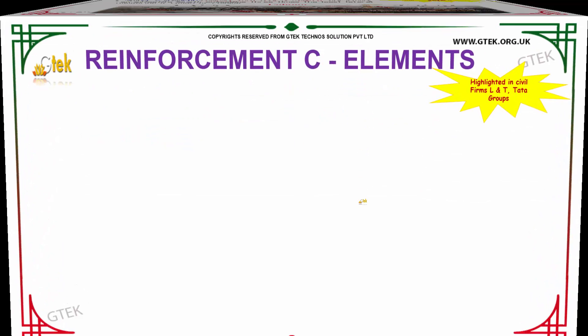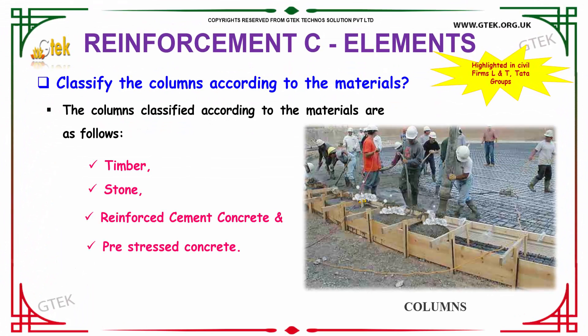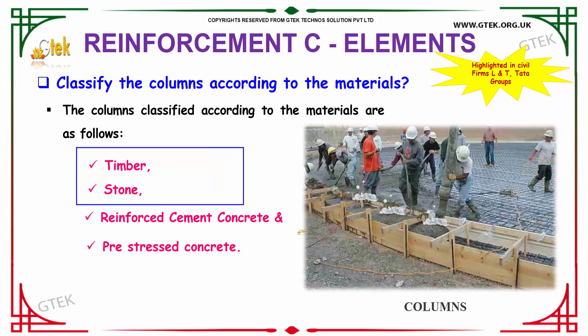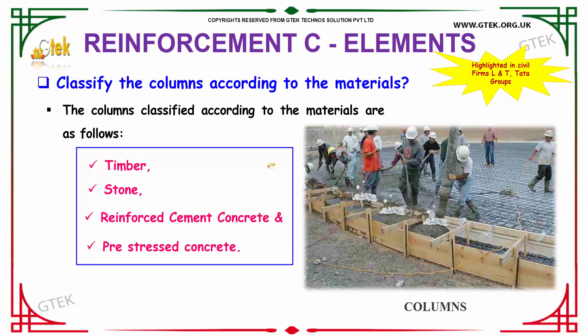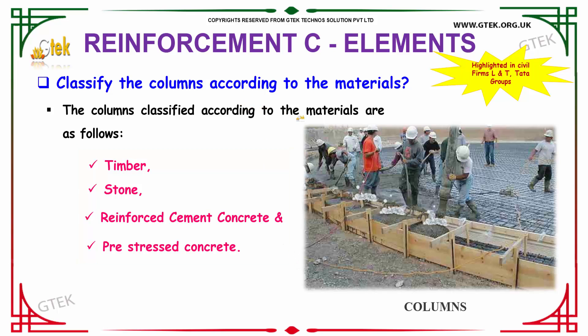Our next question is: classify columns according to the materials. Columns are classified according to materials as follows: timber, stone, and reinforced cement concrete. These are the various types of columns classified according to materials.